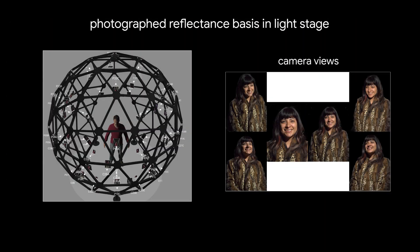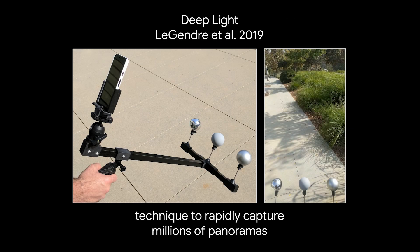In total, we photograph 70 diverse individuals wearing various accessories and performing several facial expressions in our light stage system, with 331 unique lighting directions and six camera viewpoints. We also capture about 1 million lighting environments to use for relighting, extending the rapid capture technique introduced in our earlier work, deep light.